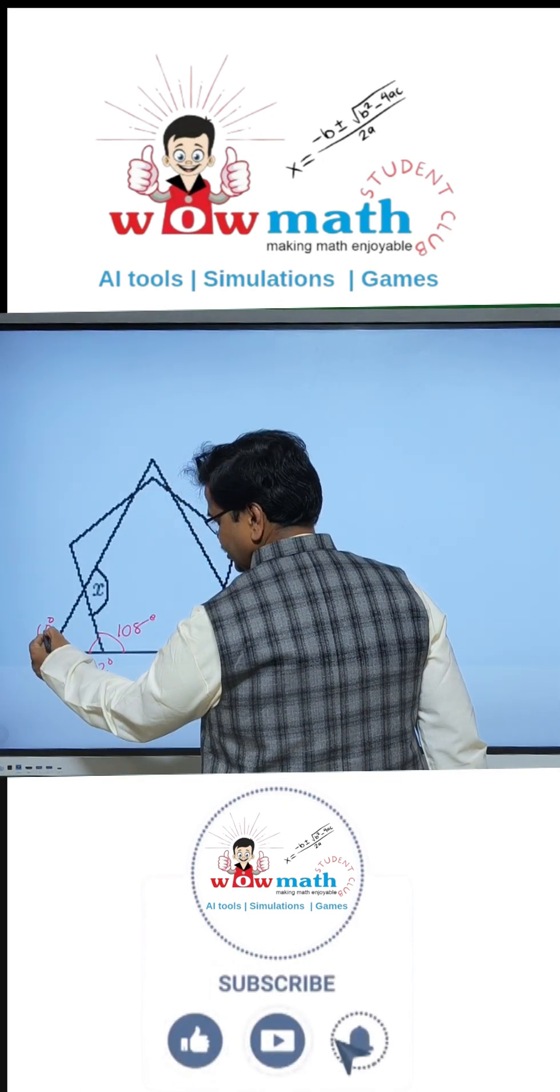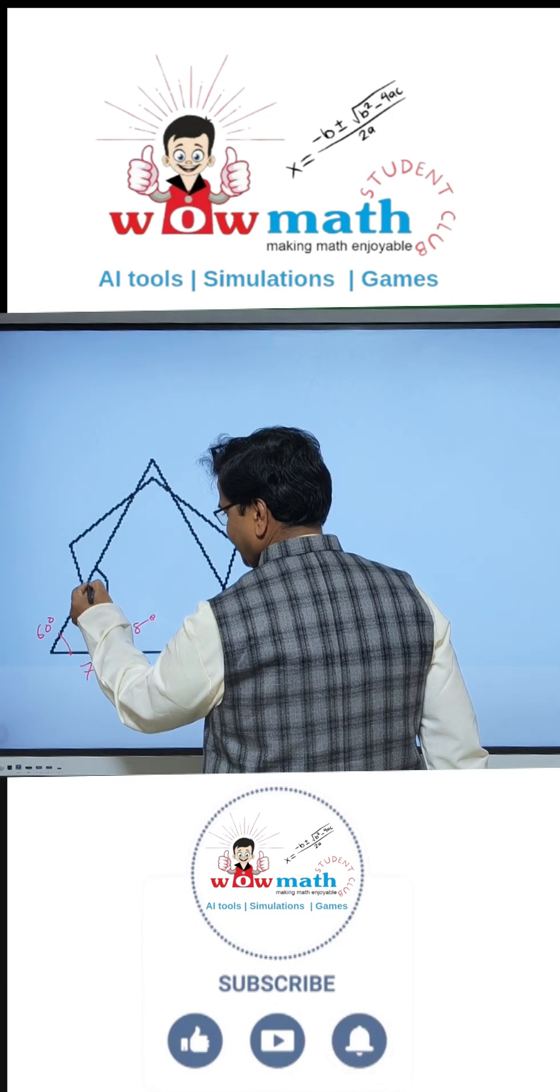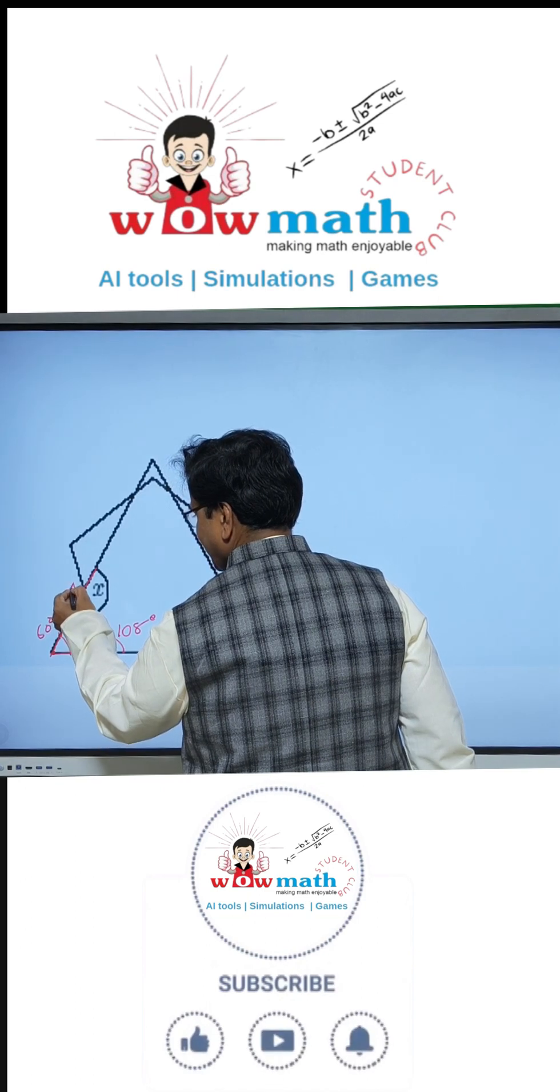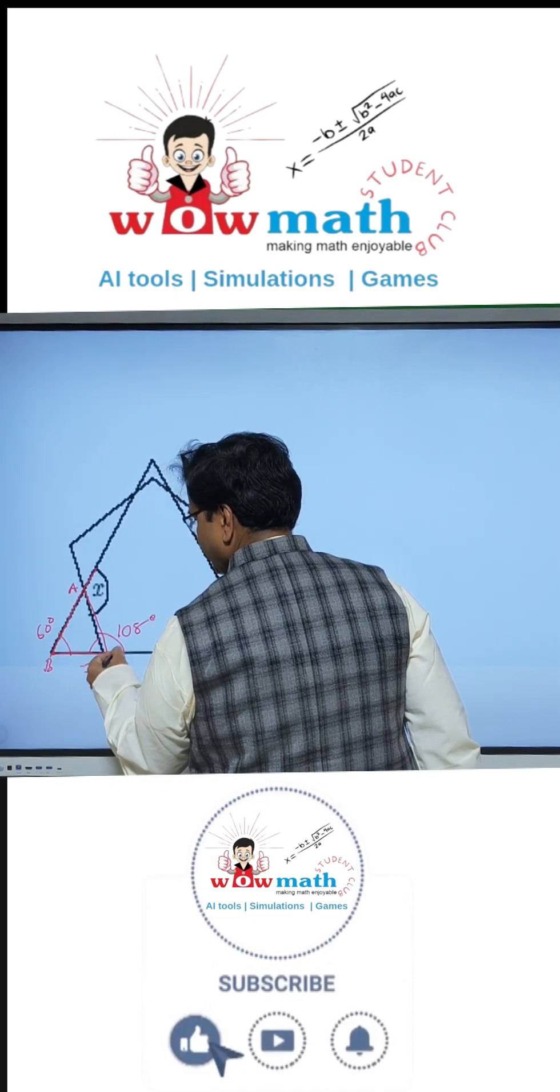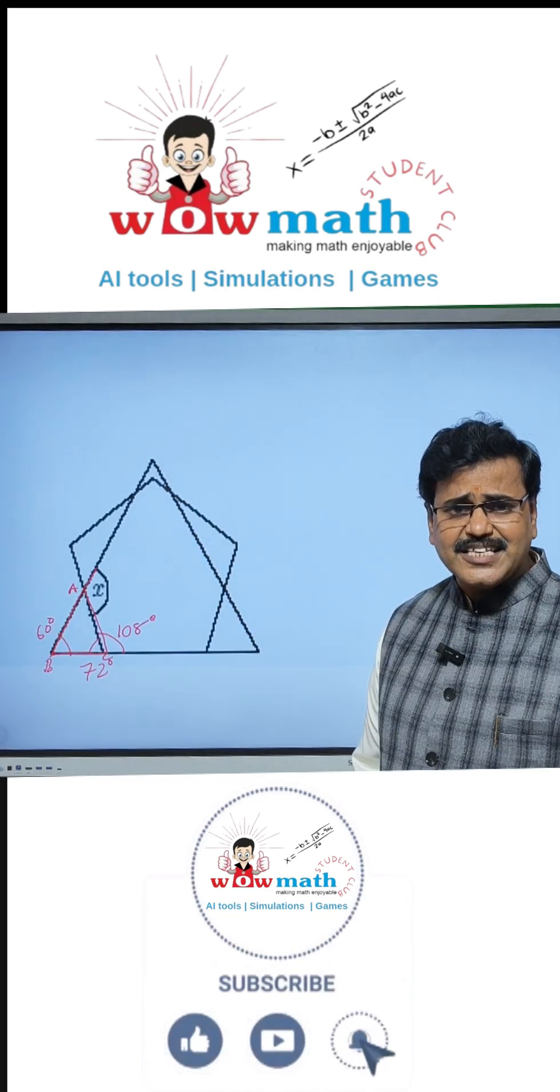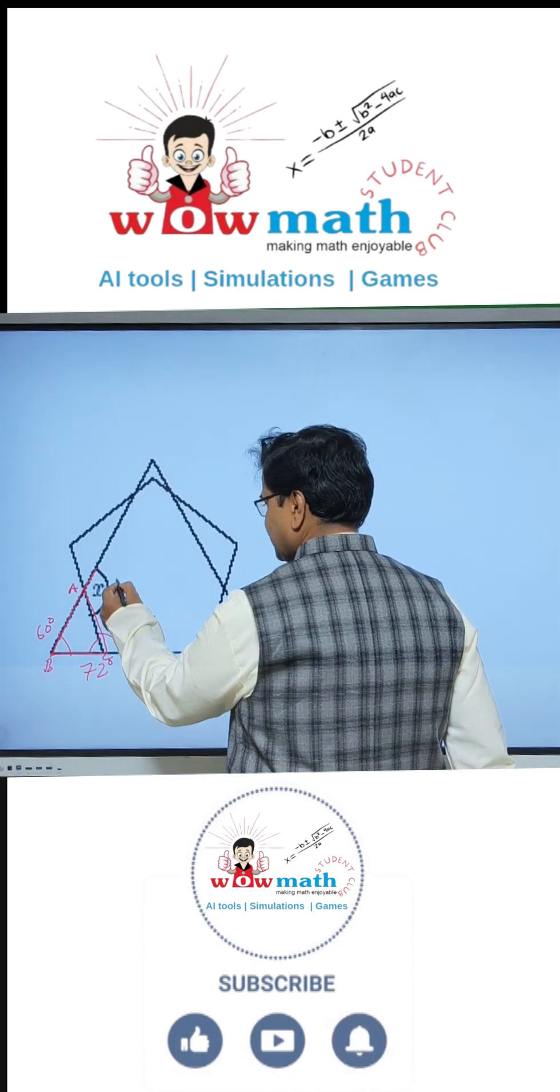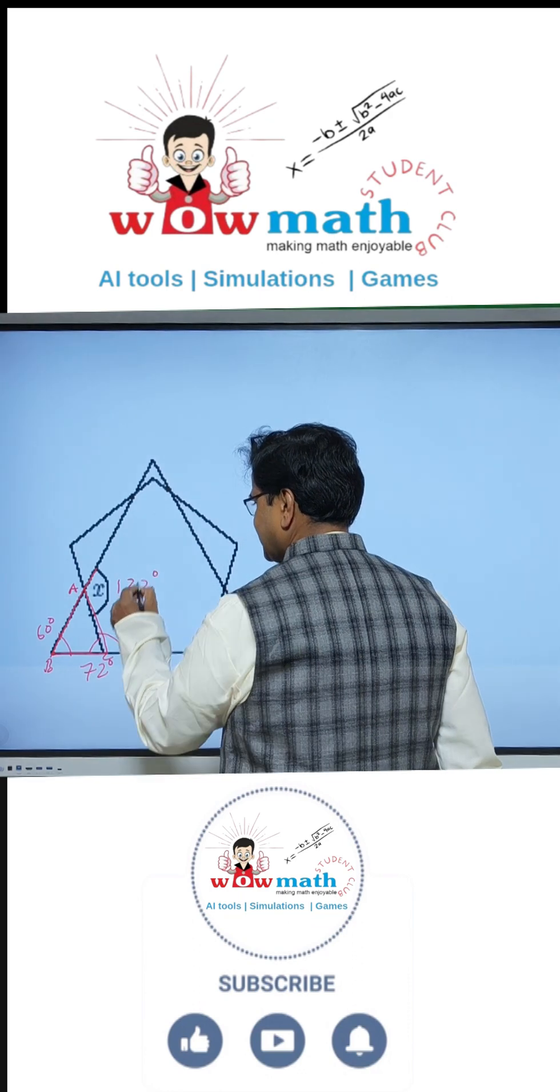Now, this 60 degrees and this 72 degrees are the exterior angles of this triangle ABC. We know the exterior angle is equal to the sum of the two opposite interior angles. Therefore, X is equal to 132 degrees.